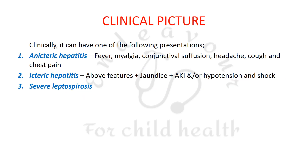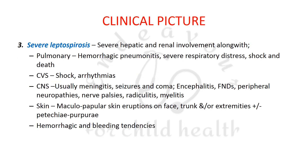Clinically, leptospirosis can present in one of the following ways: anicteric hepatitis, icteric hepatitis, or severe leptospirosis. Anicteric hepatitis is characterized by fever, myalgia, conjunctival suffusion, headache, cough, and chest pain — like a common viral illness. Icteric hepatitis has these same features along with jaundice, AKI, and/or hypotension and shock.